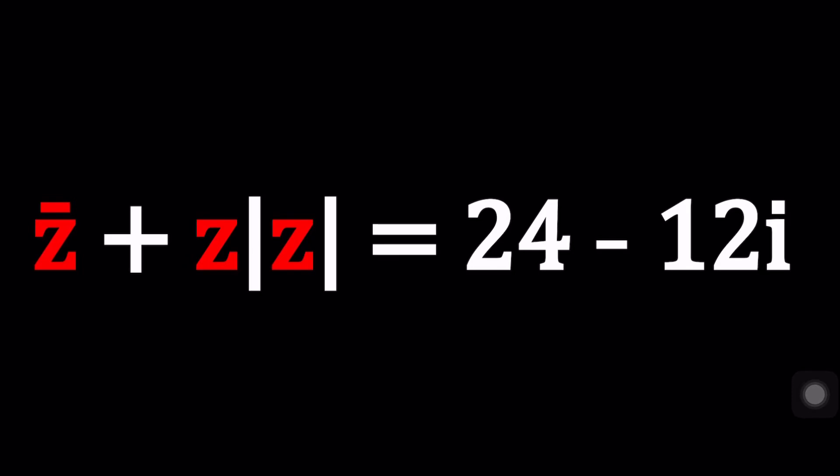Hello everyone. Welcome to A plus BI. This channel is all about complex numbers and in this video we're going to be solving an interesting equation with z, z̄ and the absolute value. If z is a complex number, its complex conjugate is denoted by z̄ which is right here.